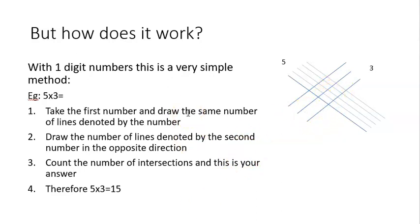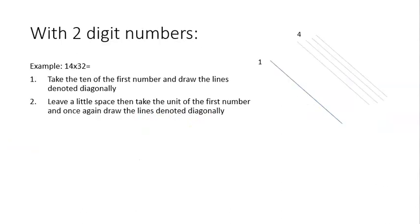So what about two-digit numbers? Like an example like 14×32. This is a bit more complicated and you might struggle to do it straight off the top of your head. So let's look at how the Chinese method actually helps us do these types of problems.